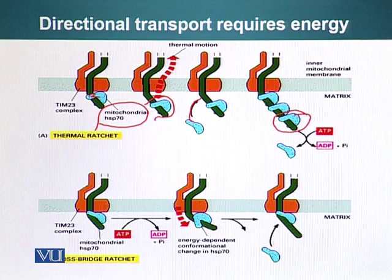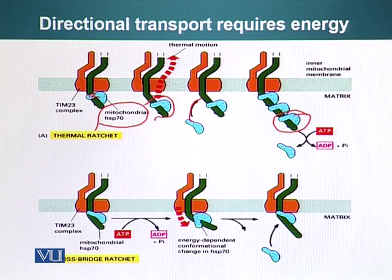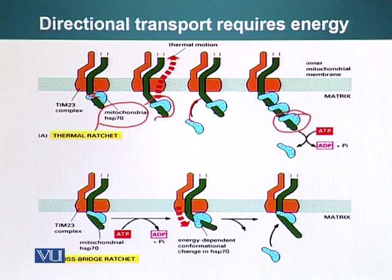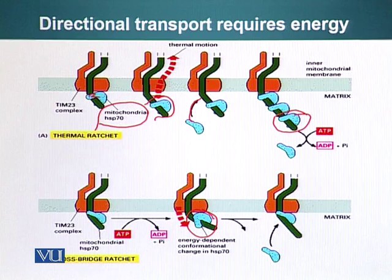The cross-bridge ratchet works on a slightly different principle. Mitochondrial HSP70 binds the protein as it emerges from the TIM23 complex. It hydrolyzes ATP, and in doing so the conformation of HSP70 changes, causing it to tug or pull on the protein, pulling it through the pore. This process repeats until the whole protein has moved into the matrix.